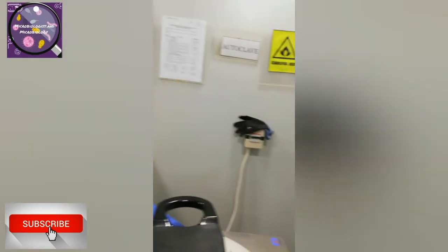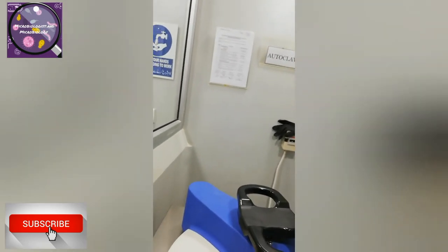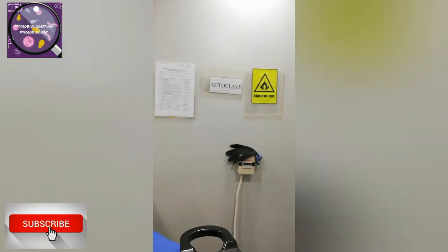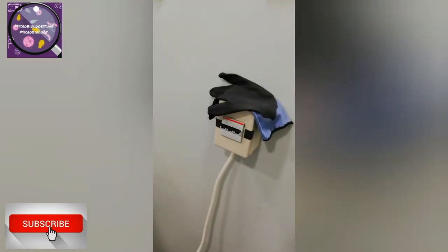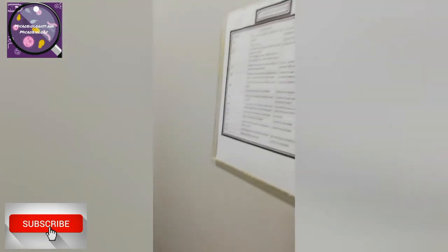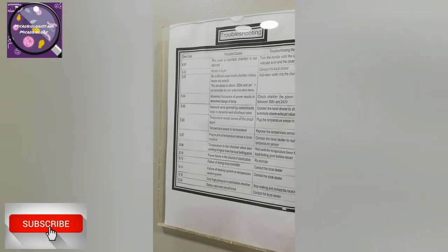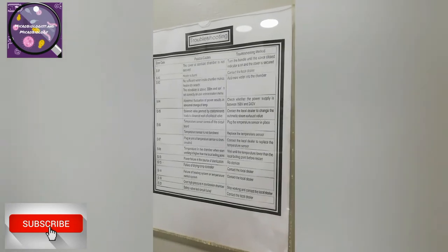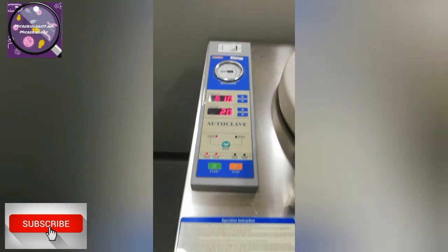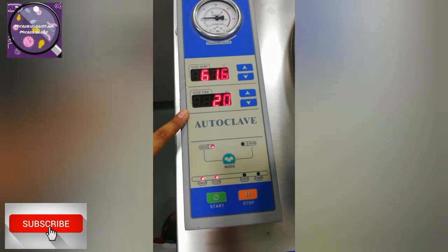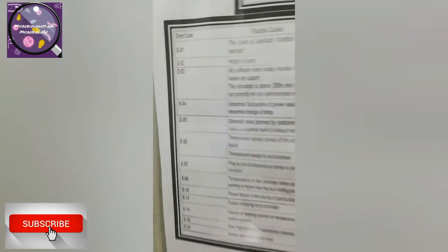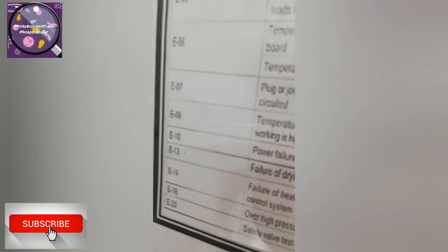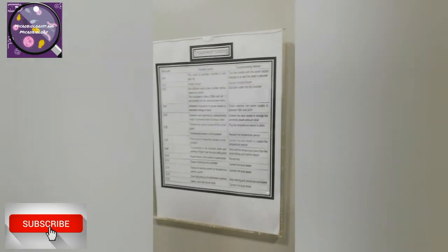You can see the SOP for autoclave and sterilization is hung on the wall, and the instrument name is also displayed so anyone can know that this instrument may cause danger when it is in operation. Gloves are available and there is a 'Careful — Hot' tag. There is also a troubleshooting chart from the autoclave manual hung on the wall. If any error occurs during a cycle, anyone working with the autoclave at that moment can look up the error and its cause from the troubleshooting chart on the wall, without needing to search through the manual.